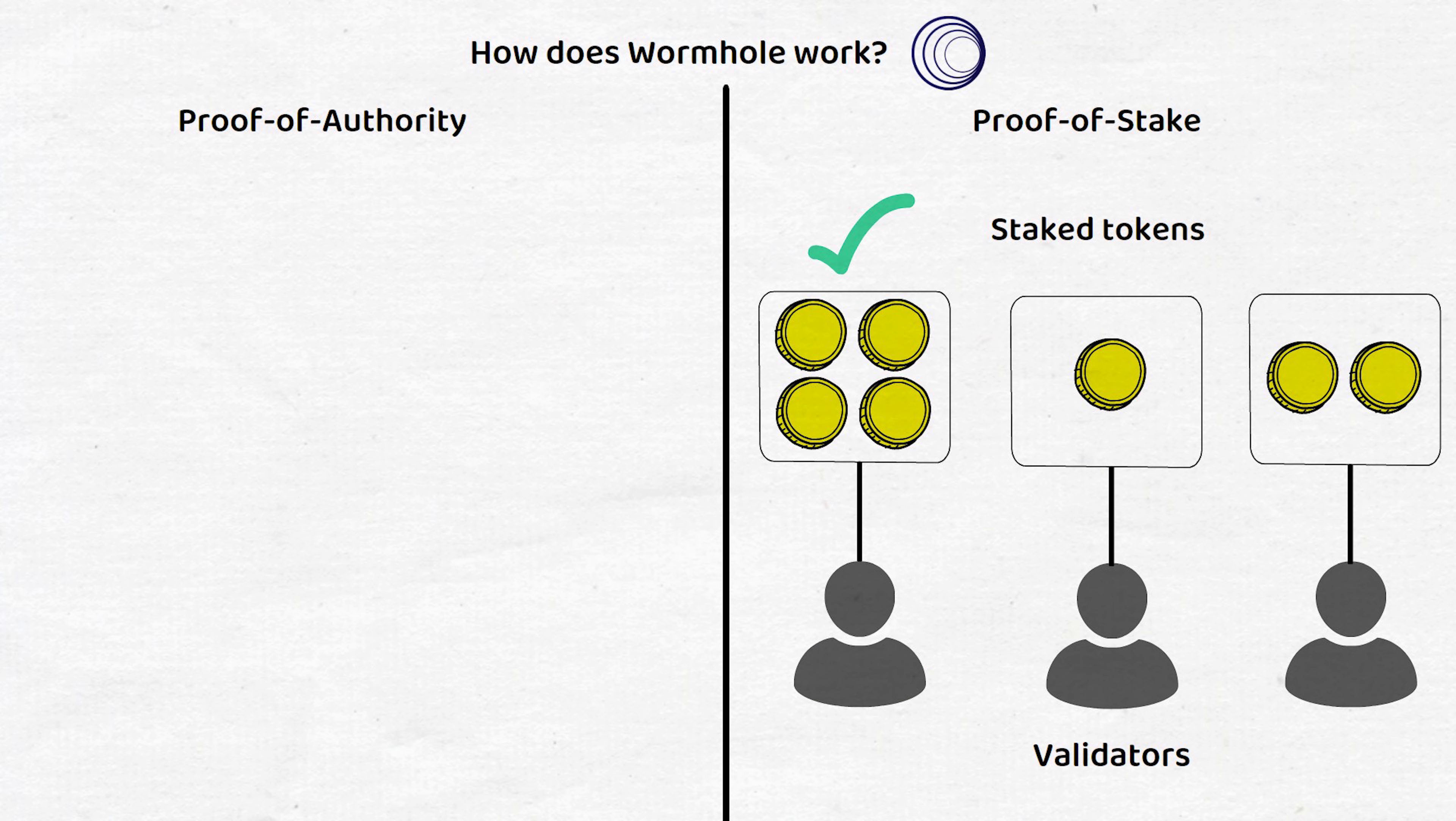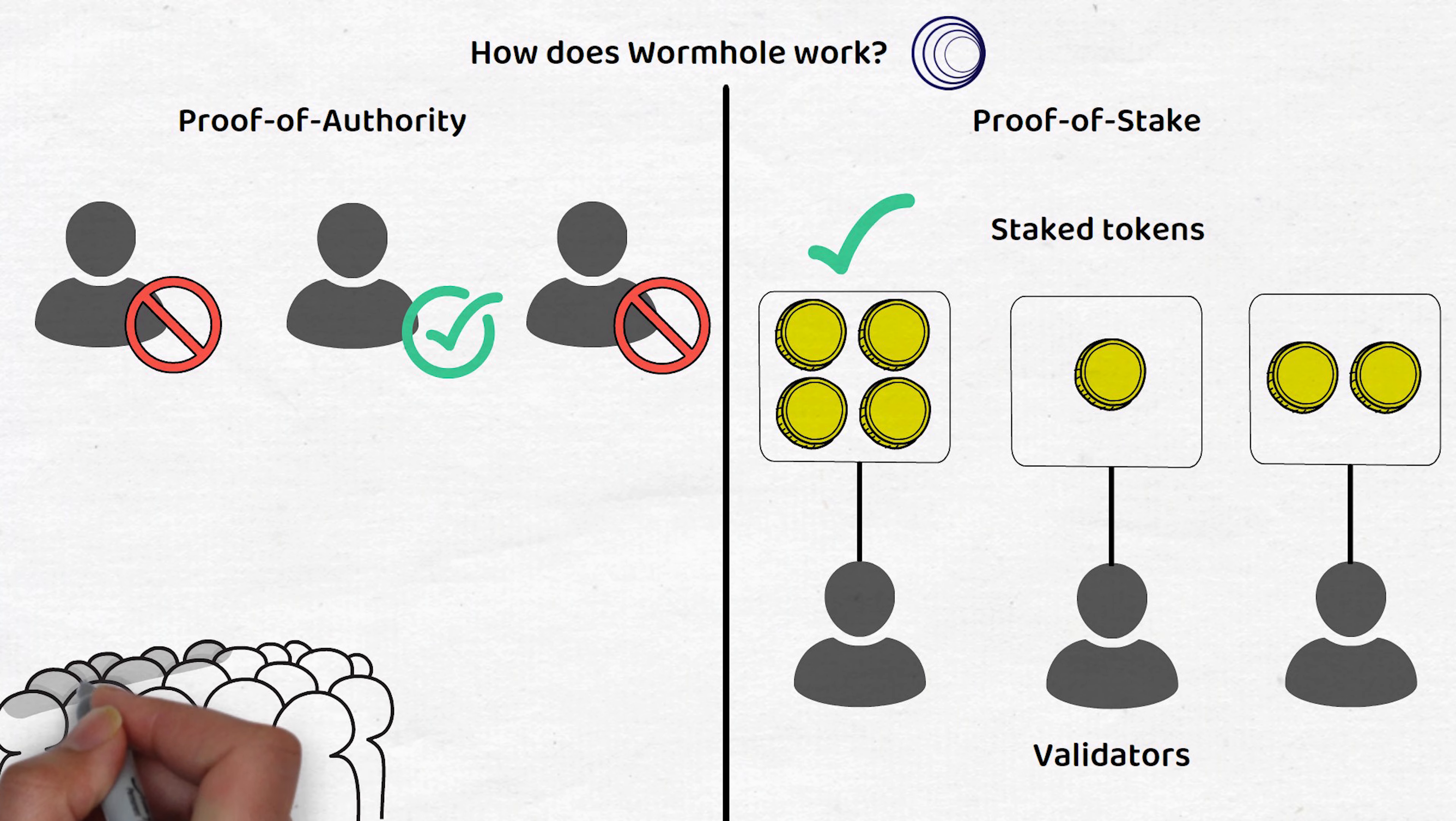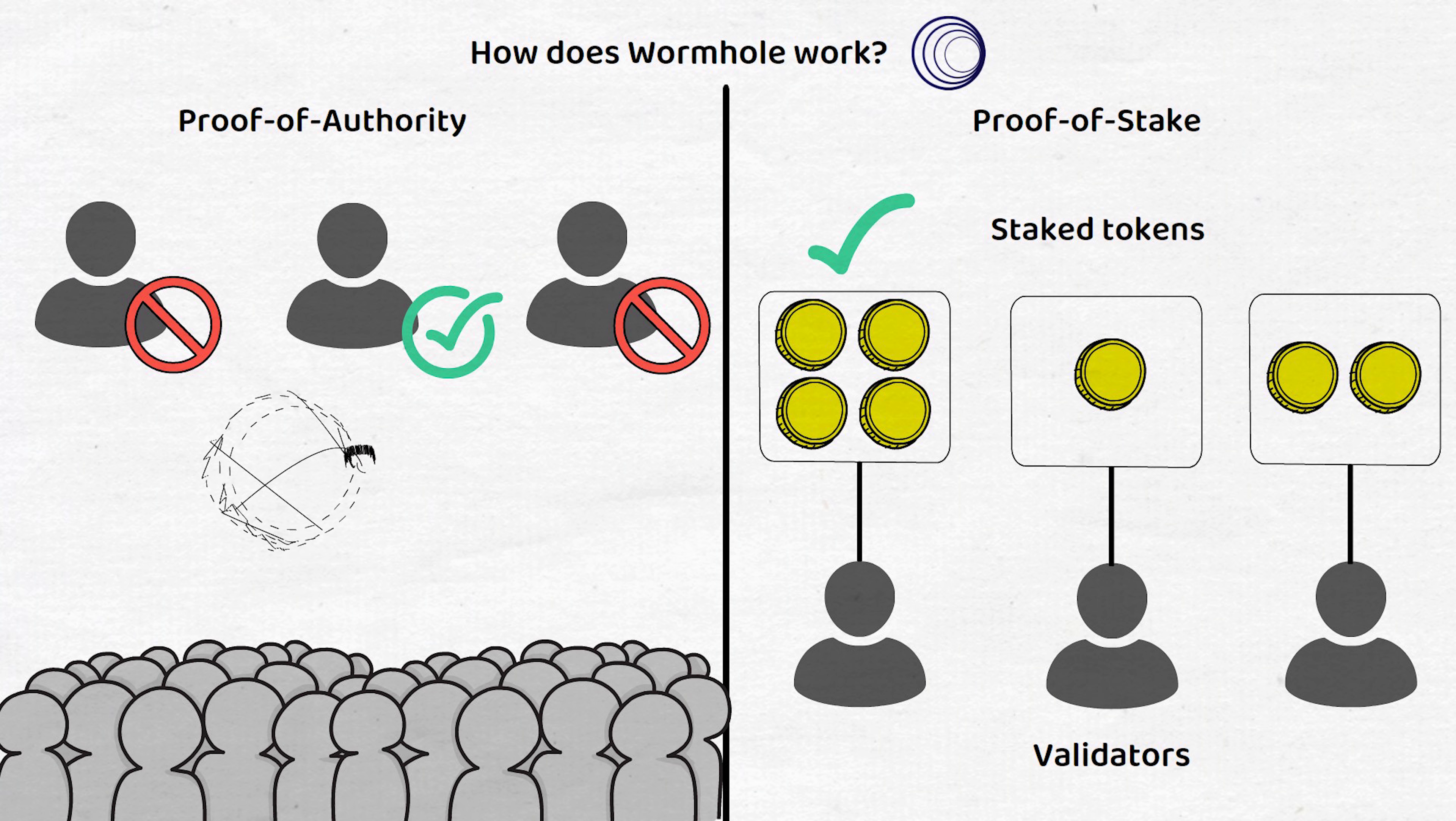under proof-of-authority, the network itself limits and dictates who can become a validator and instead lets users delegate their stake to these selected few validators and reward stakers based on their chosen validator's performance rather than their own.